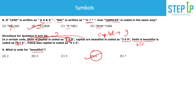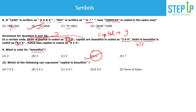Next question: What is the code for 'is'? We know capital = 9 and beautiful = 6, but 'is' could be either 7 or 5 — we cannot determine which without another statement that isolates it. So the answer is 'cannot be determined.' This is an important trap: even with multiple coded sentences, some word codes remain ambiguous.